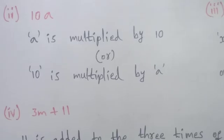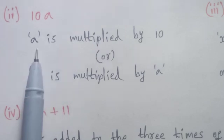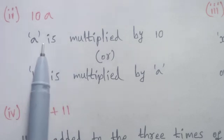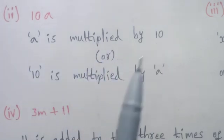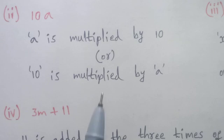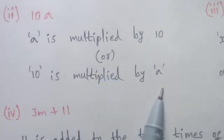Second expression: 10 into a. First sentence: a is multiplied by 10. Second sentence: 10 is multiplied by a.